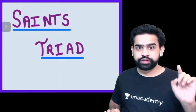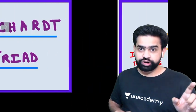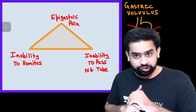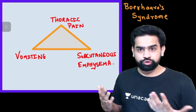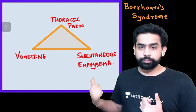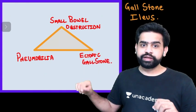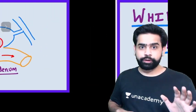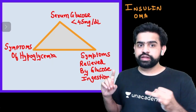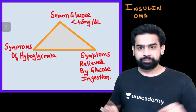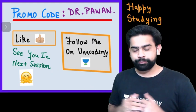To recap the five triads: Saints Triad — seen in gallbladder stones, consisting of gallbladder stones, hiatal hernia, and colonic diverticulum. Borchardt's Triad — gastric volvulus: severe epigastric pain, inability to pass the NG tube, inability to vomit. Mackler's Triad — Boerhaave syndrome: thoracic pain, subcutaneous emphysema, and vomiting. Rigler's Triad — gallstone ileus: small bowel obstruction, pneumobilia, and ectopic gallstone. Whipple's Triad — insulinoma: glucose less than 45, symptoms of hypoglycemia, relief with glucose.